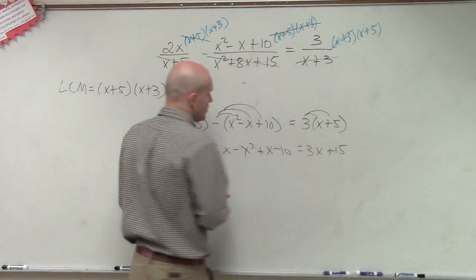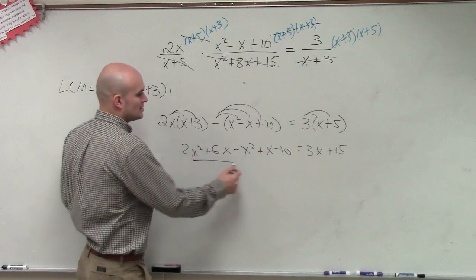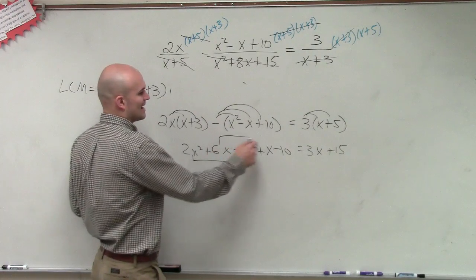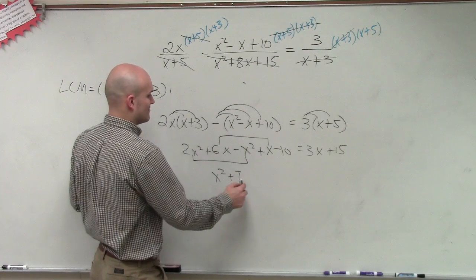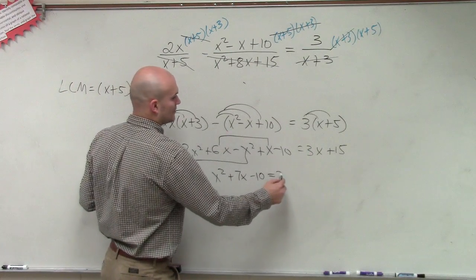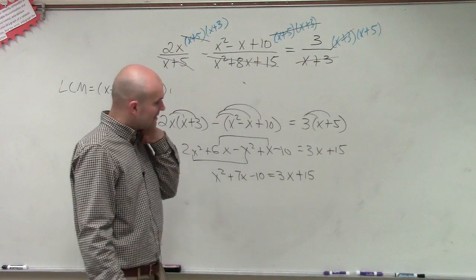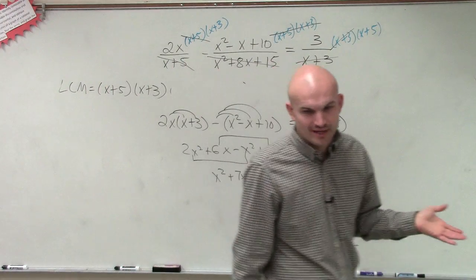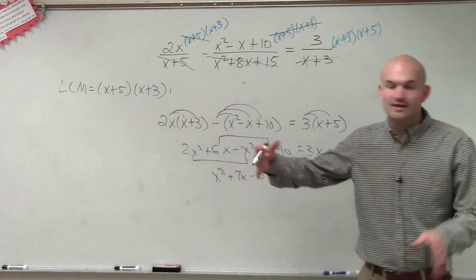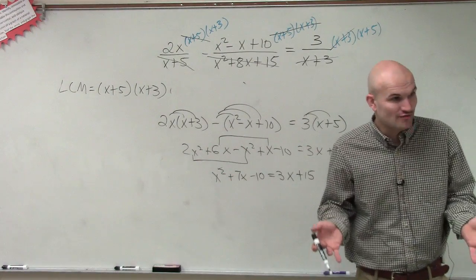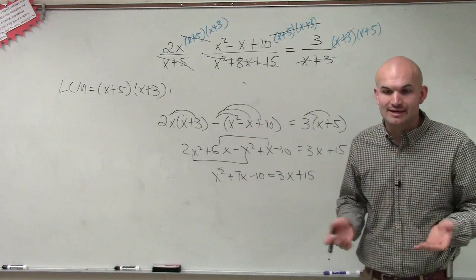Before we get our variable to the same side, let's combine like terms. I can combine my x² terms and my x terms, so I'm left with x² + 7x − 10 = 3x + 15. And automatically, ladies and gentlemen, I notice this is going to be a quadratic because I still have an x². So rather than isolating x like a linear equation, I need to set this up as a quadratic and set it equal to 0.